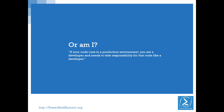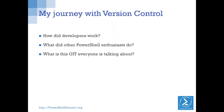Then one day, not too long ago, someone told me that if your code runs in production environments, then you're a developer. And if you're a developer, you need to take responsibility for that code like a developer does. I'm not saying that I'm a developer — I don't really care. But the thing about this sentence is that especially if someone else runs my code in their production environment, I've got to take a certain responsibility for that code. That's when I started to look into how developers worked, what other enthusiasts did, and how they managed their code. I started to try to figure out what this Git everyone was talking about really was.